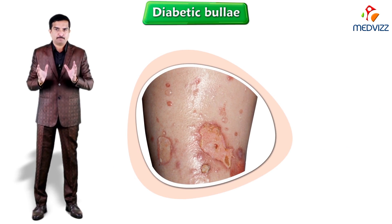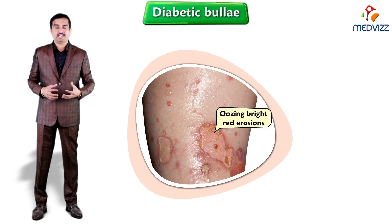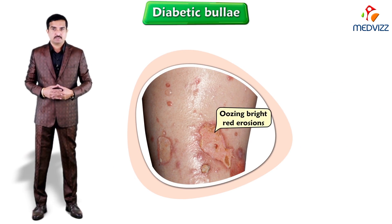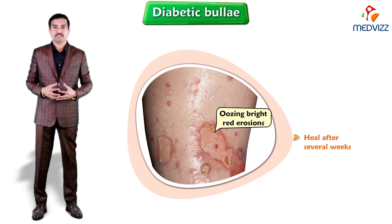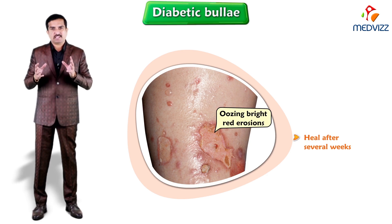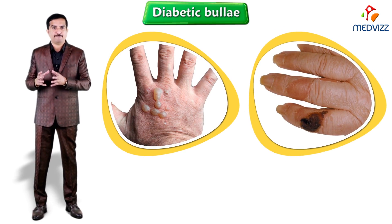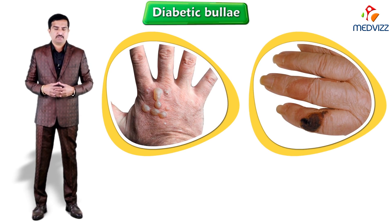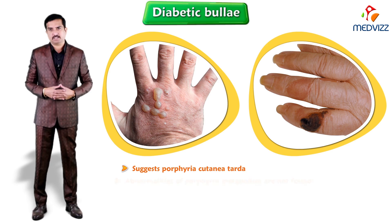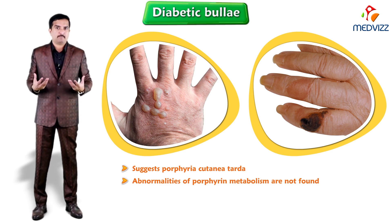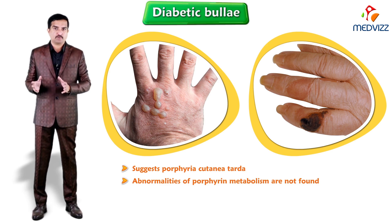When these bullae get ruptured, they leave bright red erosions, but they heal after several weeks. They are especially localized on the dorsal of the hand and fingers, which mainly suggests porphyria cutanea tarda, but abnormalities of the porphyrin metabolism are not found.